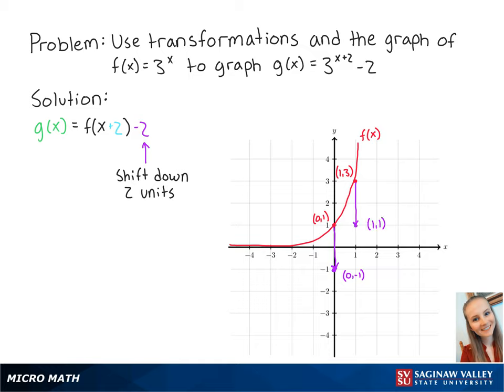Also notice that the asymptote on the x-axis also shifts down 2 units. Connecting the points gets us the graph of f of x minus 2.